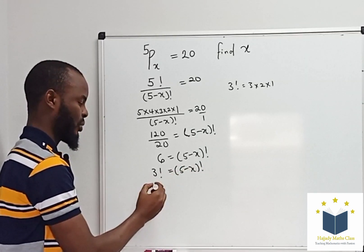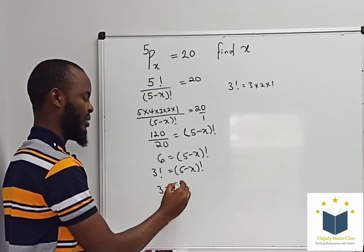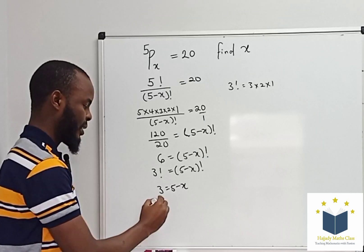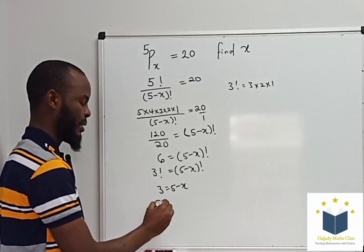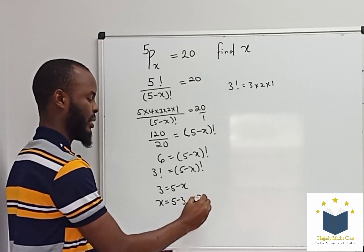Since both of them are in factorial, this is the same thing as saying 3 equals 5 minus x. Then, you say that x is the same thing as 5 minus 3, that is x equals 2.